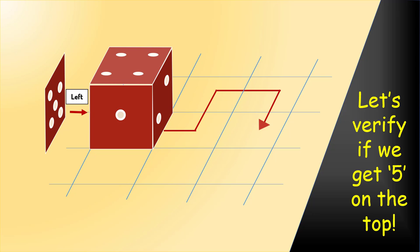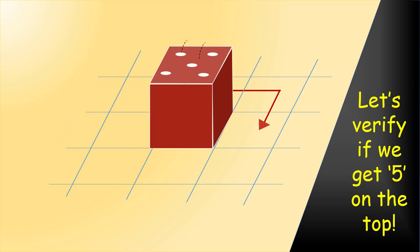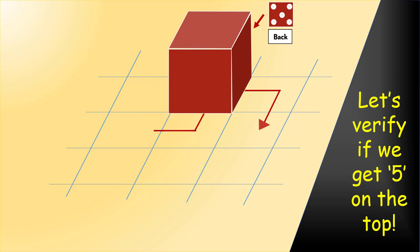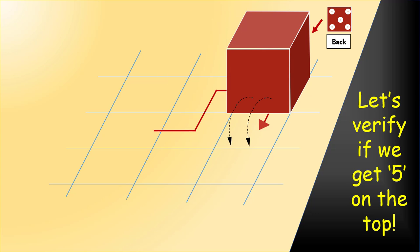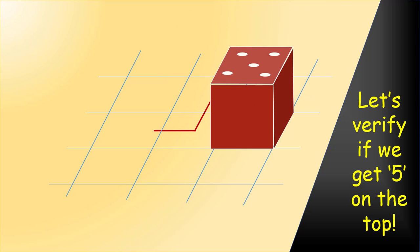Let's verify it by tracing the path in the normal forward way. 5 is on the left. So, after the first move, 5 would be on the top. Next, it would go to the back. Next, it will stay on the back. Next, it will come on the top. So, the number 5 will be on the top.